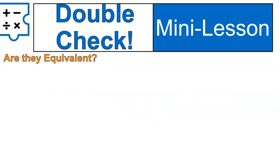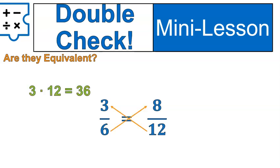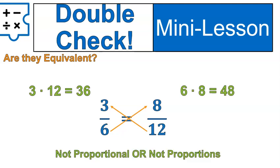Here we go. I want you to double check. Pause and practice. Is 3 sixths equal to 8 twelfths? Go. We're using cross multiplying. So we're doing 3 times 12 and 6 times 8. They are not equivalent, so they are not proportional. Or we would say these are not proportions.